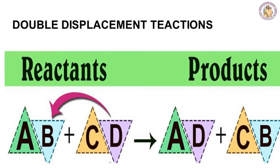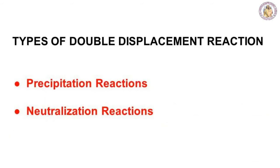Double displacement reaction: when two compounds react, if neither ion interchanges, it becomes a double displacement reaction. In AB + CD → AD + CB, A joins with D and B joins with C. The ion of one compound is replaced by the ion of another compound — two reactants give two products. A cation can be replaced by another cation. This reaction is also called a metathesis reaction. There are two types of double displacement reaction: precipitation reaction and neutralization reaction.